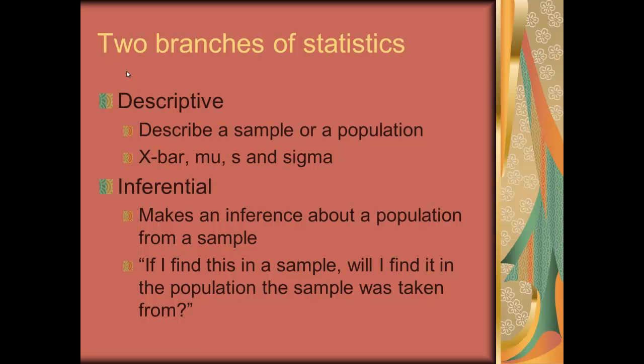Descriptive statistics does what the name says — it describes a sample or a population. The statistics we use there are x-bars, mu's, s, and sigma. X-bar is the sample mean, mu is the population mean, s is the sample standard deviation, and sigma is the population standard deviation.